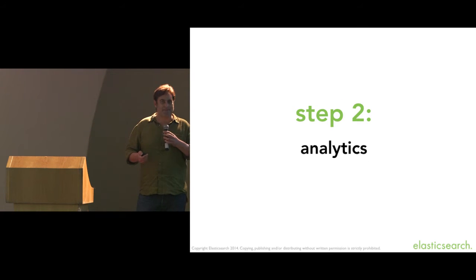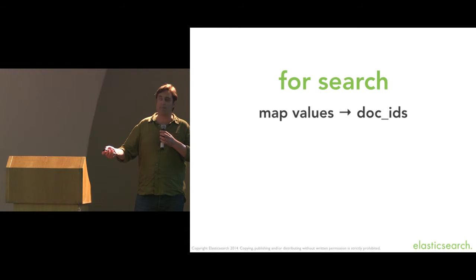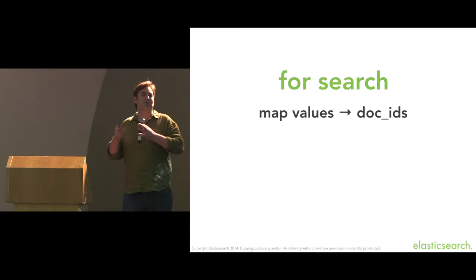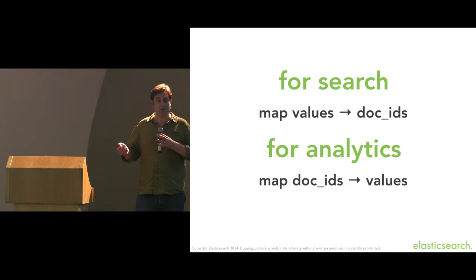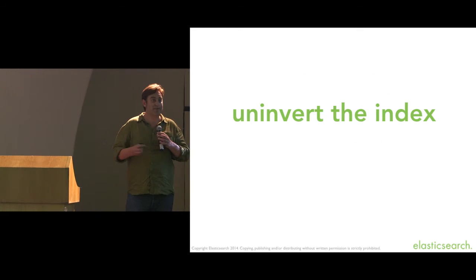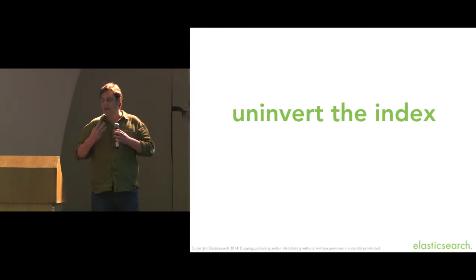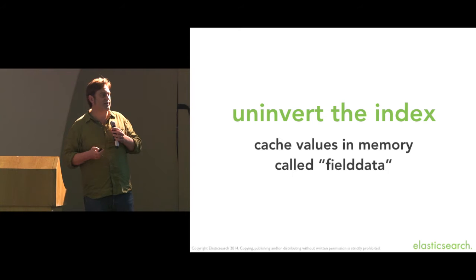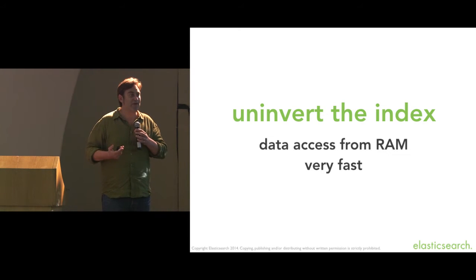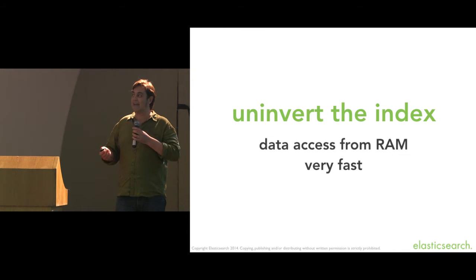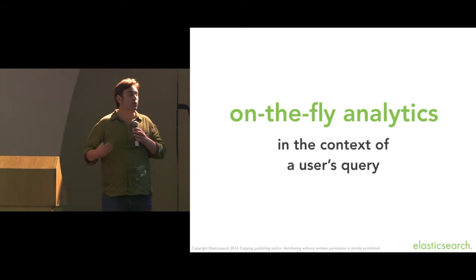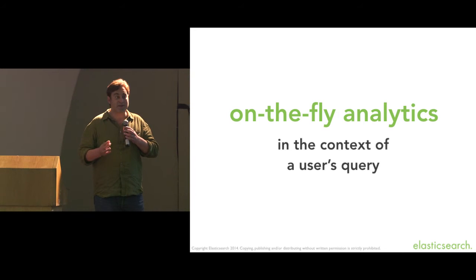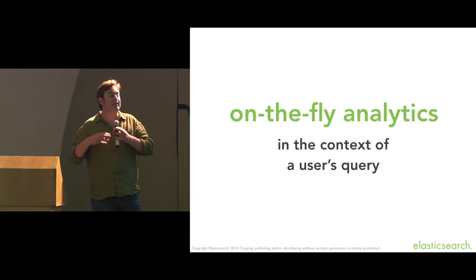The next step is analytics. For search we have the inverted index which maps values to document IDs. For analytics we need to go from the document ID to the value it contains — we need to un-invert the inverted index. That can be a slow process, so we cache these values in memory for fast access, and in Elasticsearch we refer to that as field data. When you need to calculate analytics, it's coming out of your RAM, so it's really fast. It gives you on-the-fly analytics in the context of a user's query, so the next user comes along, searches on different keywords, and the analytics shown are exactly right for their keywords.